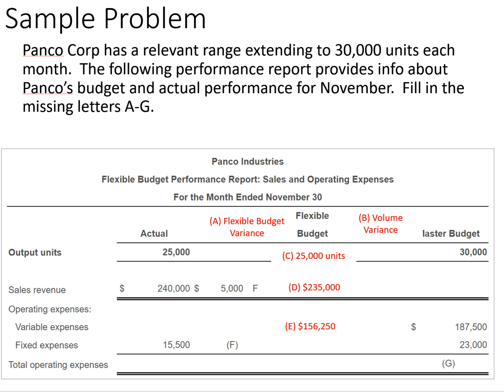Next we need to fill in F, which is fixed expenses and the flexible budget variance. Fixed expenses are based on the master budget — they're fixed, after all. At 23,000 in the master budget, minus actual fixed expenses of 15,500, that gives us a favorable variance of 7,500. We came in lower on fixed expenses than what was estimated.